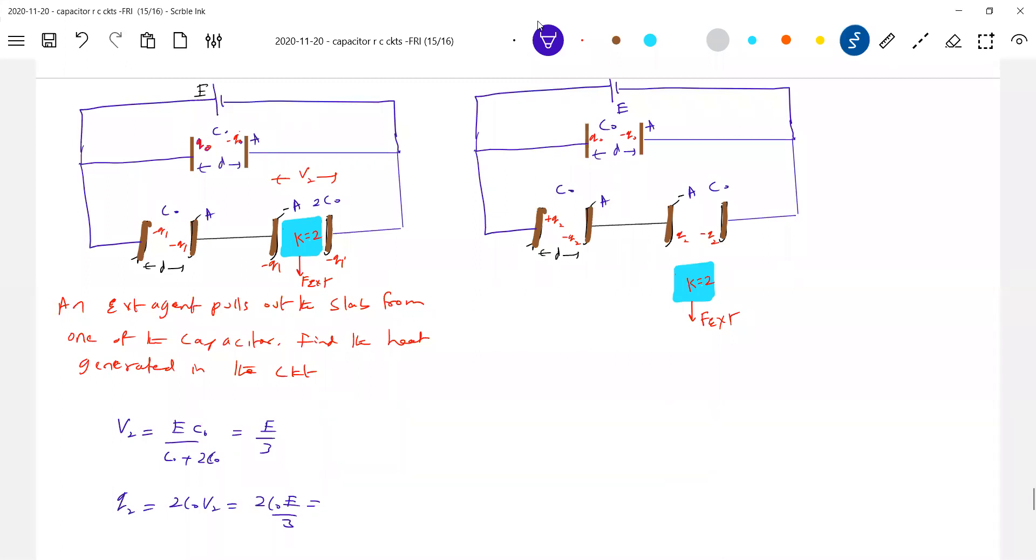Okay, let's get into after removing slab. Both are of same capacitance, so definitely watch the drop here. V2 dash, so what is V2 dash, should be equal to C0 into E by C0 plus C0, will be E by 2. This is Q1, sorry. Now Q2 dash should be equal to C0 into V2 dash, so C0 E by 2.